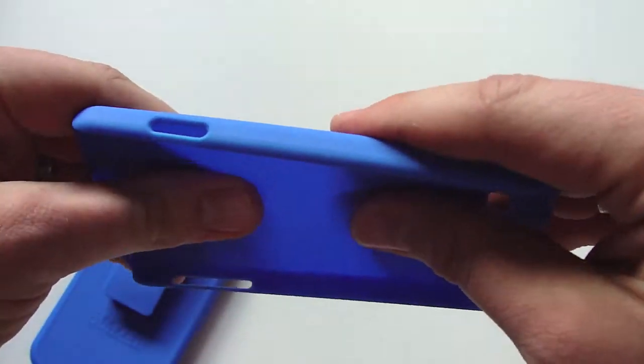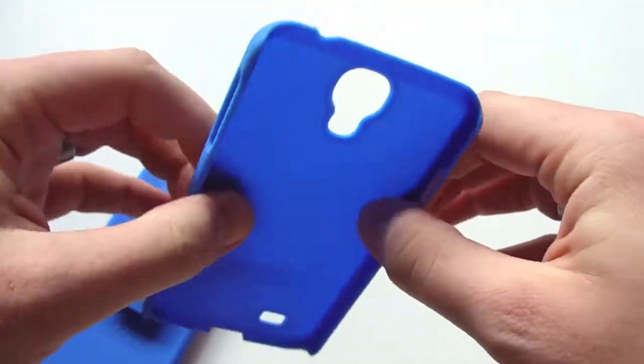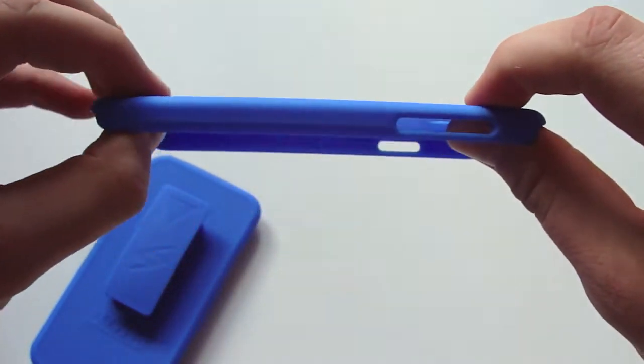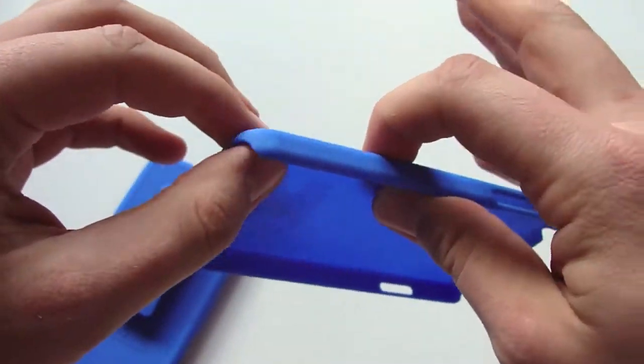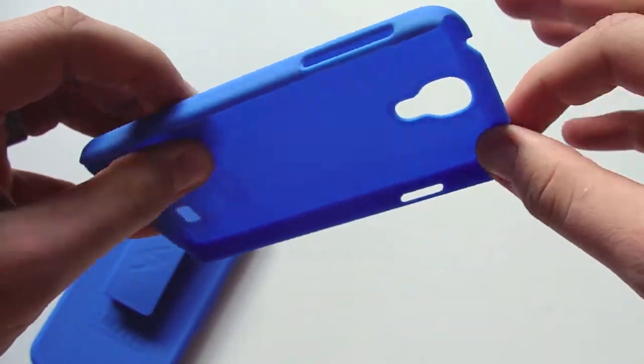This is like a hard plastic kind of polycarbonate material. It's going to give the overall protection. You'll get exposure on the top and the bottom.